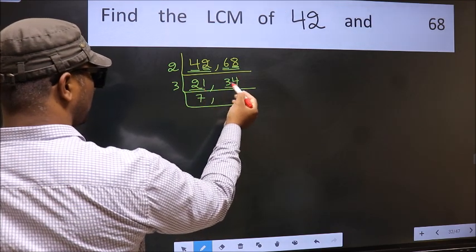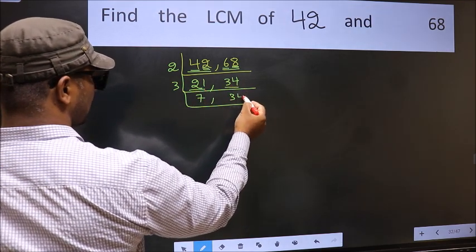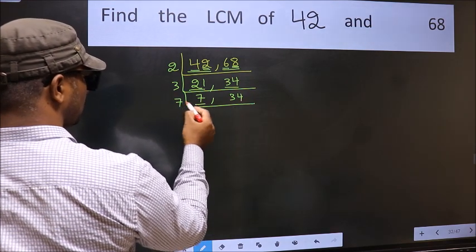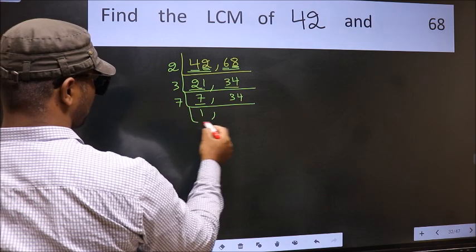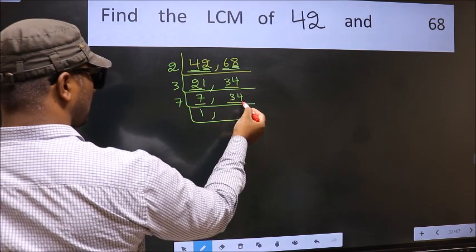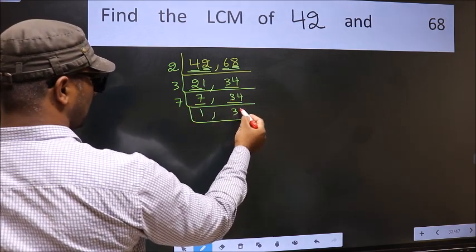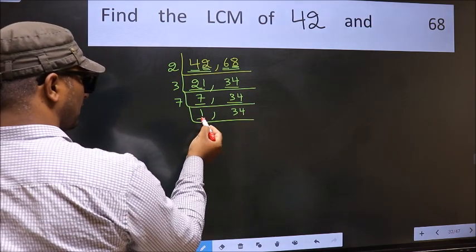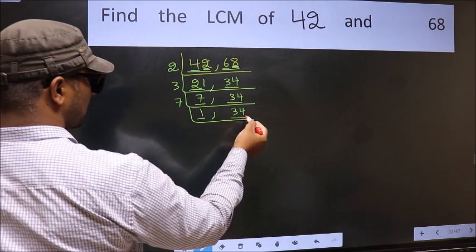Now here we have 7. 7 is a prime number, so 7 times 1 is 7. The other number 34, not divisible by 7, so we write it down as it is. Now we got 1 here, so focus on the next number, 34.